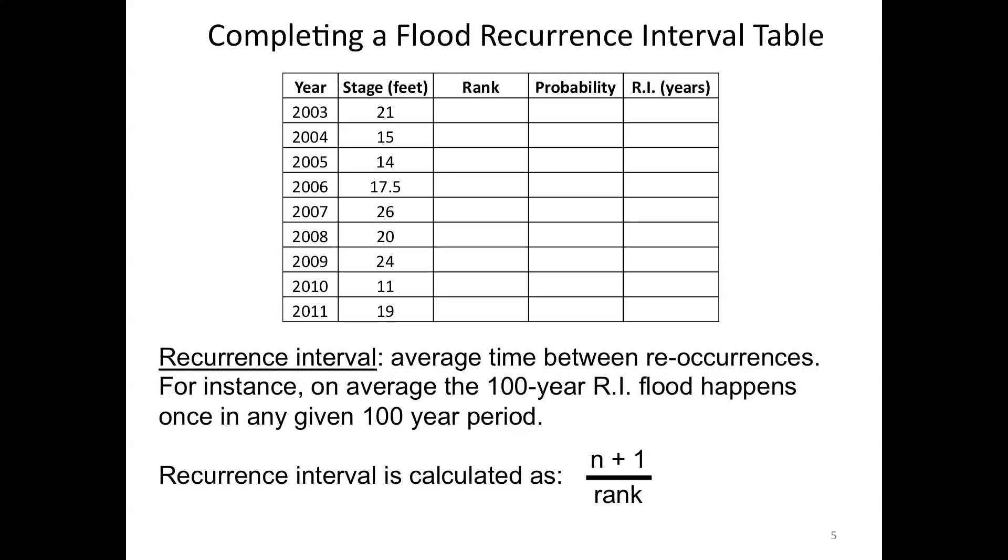But after we calculate probability, we can go through then and calculate the recurrence interval, which is again what we're most interested in in this particular case. The recurrence interval is just n plus 1 divided by rank, so this is going to be 9 plus 1 or 10 divided by the rank. And we'll see that again here shortly.